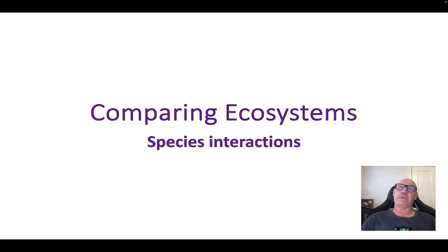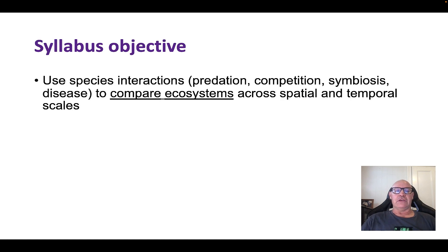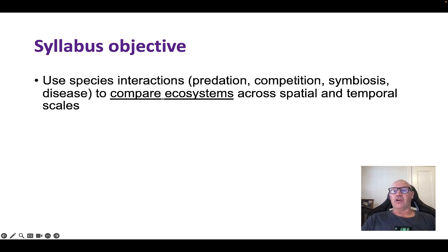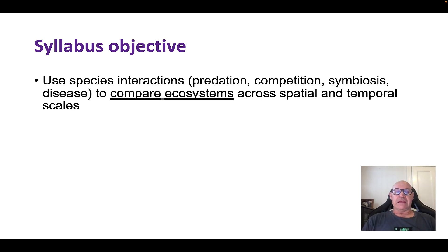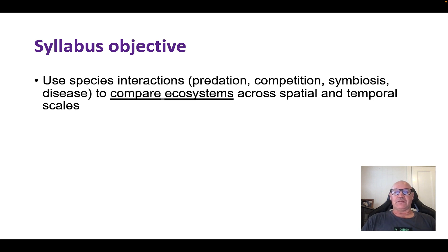This video is about comparing ecosystems related to species interactions. The specific syllabus objective says to use species interactions — predation, competition, symbiosis, and disease — to compare ecosystems across spatial and temporal scales. Spatial refers to distance and temporal refers to time. We're looking at comparing ecosystems by examining what we might describe as biotic relationships, which are the interactions between species.